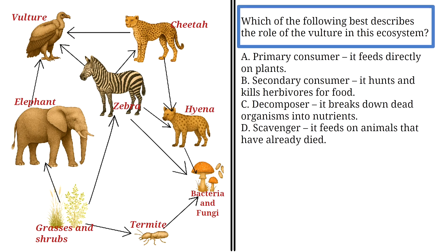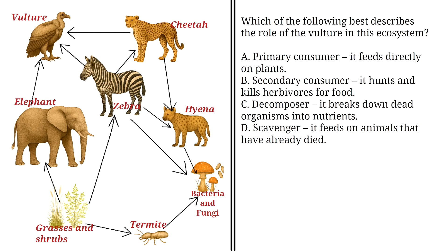Which of the following best describes the role of the vulture in this ecosystem? This is an example of a life science question in GED science. In order to pass your GED science exam, you must be able to analyze diagrams from the life sciences and draw logical and useful conclusions out of them.